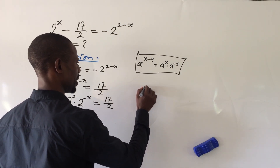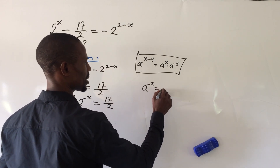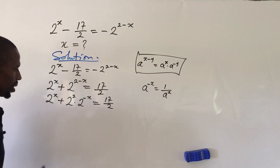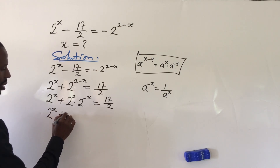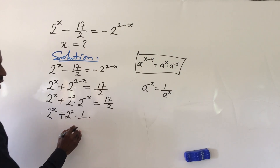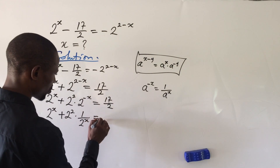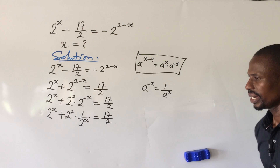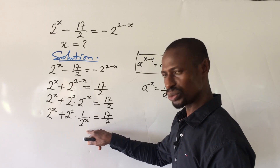Now we deal with the negative exponent. Recall that a^(-x) equals 1 over a^x. Applying this, 2^(-x) becomes 1 over 2^x. So the equation becomes: 2^x plus 2^2 times (1 over 2^x) equals 17 over 2, which simplifies to 2^x plus 4 times (1 over 2^x) equals 17 over 2.